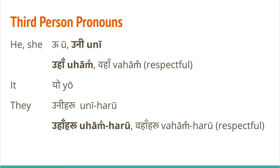Third person — for he or she, you can say 'u' or 'uni'. U is okay, uni is more respectful. 'Uha' or 'waha' are much more respectful, similar to tapai and Hajur as you saw previously. 'It' is 'yo' and 'they' is 'uni haru'. Uni you can see comes from he or she, and the plural of uni is uni haru. The respectful plural is uha haru or waha haru. The haru suffix makes everything plural.